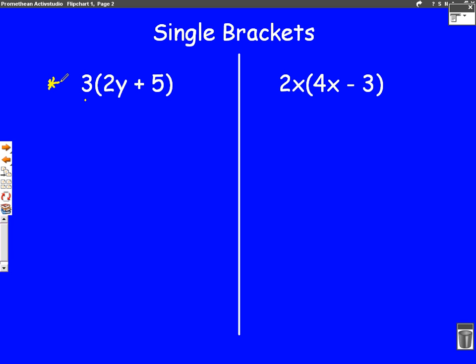Well as I've just said, whenever you see a bracket in a Maths exam you've got to get rid of it. So as we've learnt in class we put on the arrows, so the 3 goes to there and the 3 goes to the 5. Each one of these arrows means multiply. So the first arrow, 3 times 2y, well 3 times 2 is 6 and don't forget to put the y.